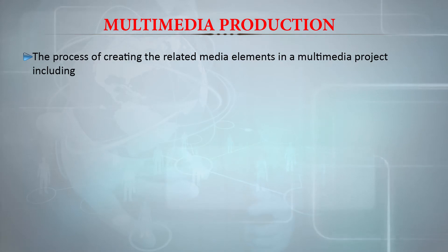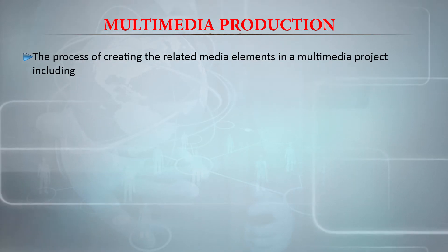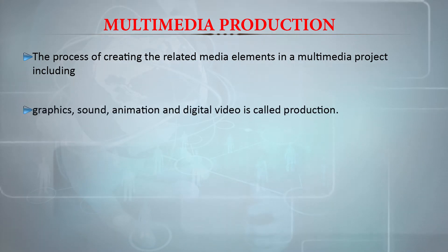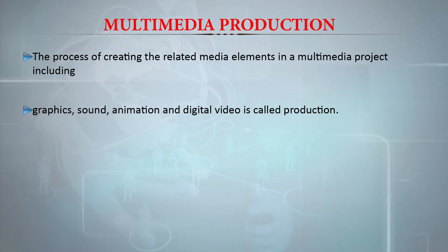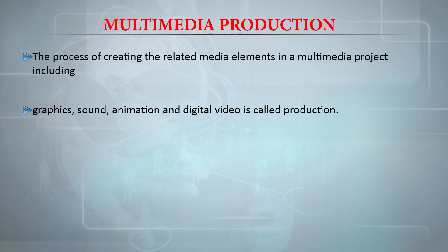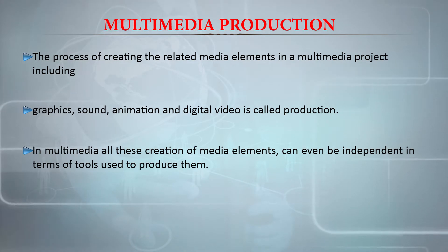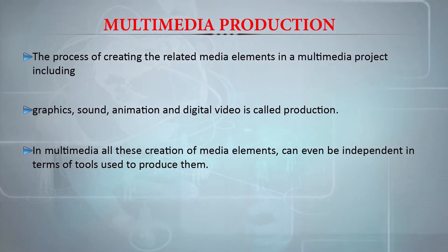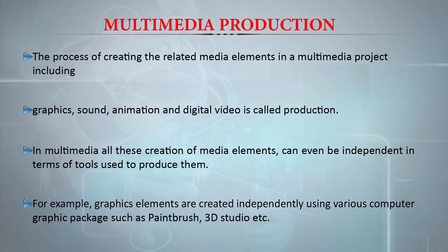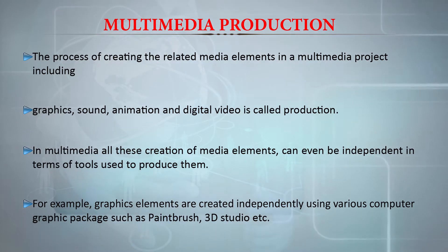The process of creating the related media elements in a multimedia project — including graphics, sound, animation and digital video — is called production. Production means creating the relative media elements and combining and incorporating all the media to produce the final product. In multimedia, all this creation of media elements can be developed independently using various tools, and after producing the individual components, they are combined into one product. For example, the graphic elements are created independently using various computer graphics packages such as 3D Studio or PaintBrush, and after creating these elements they can be incorporated in the authoring tool.